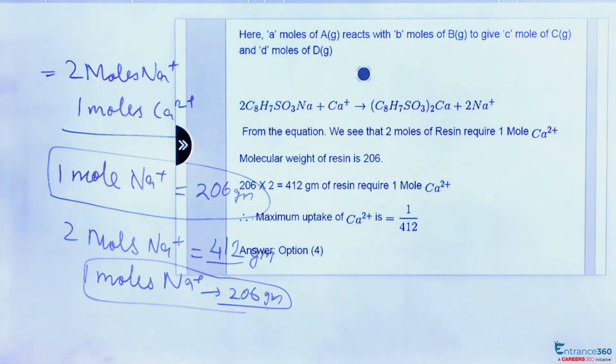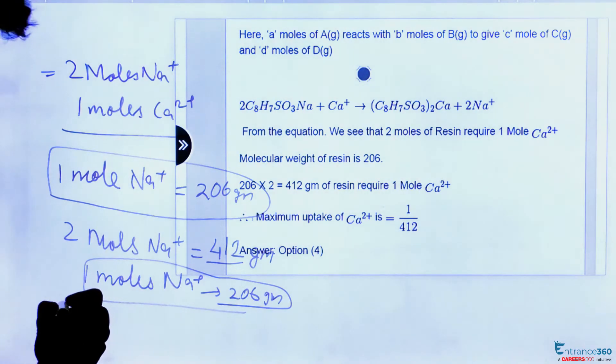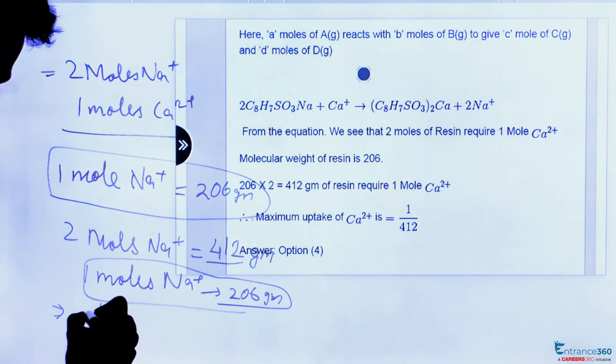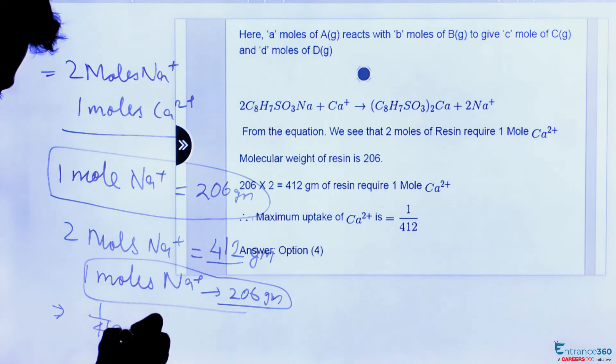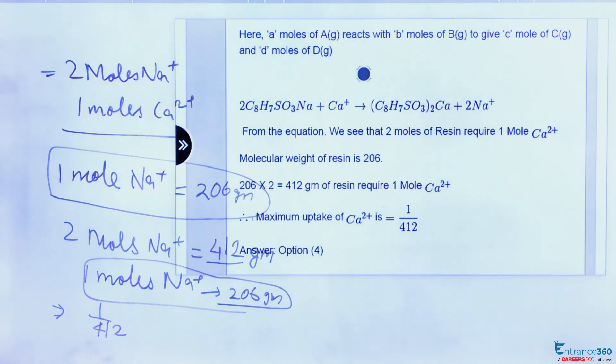So the net reaction would be 1 upon 412. This is the amount of calcium ion that would be exchanged per gram of resin.